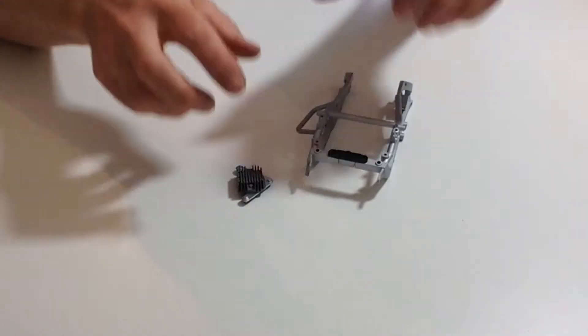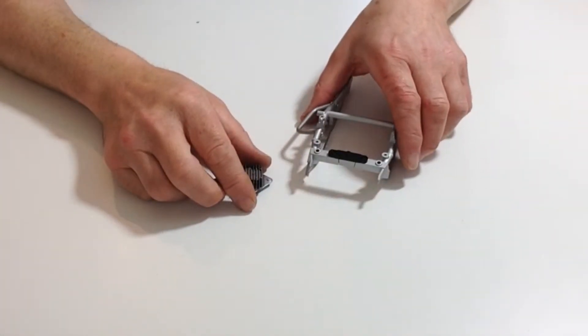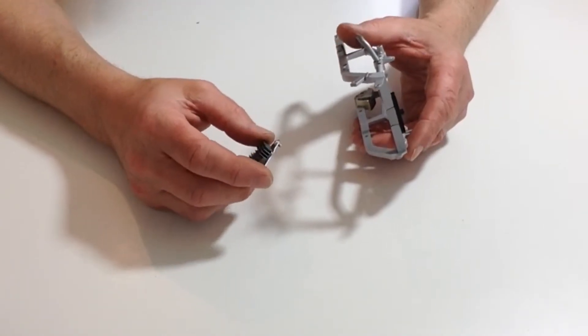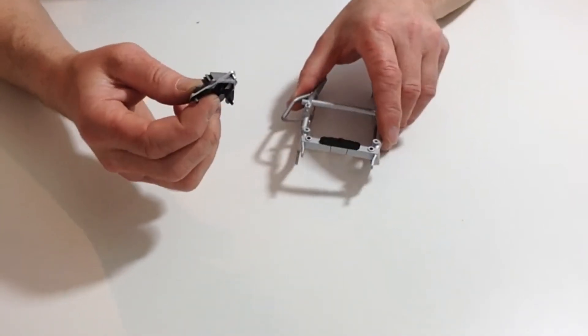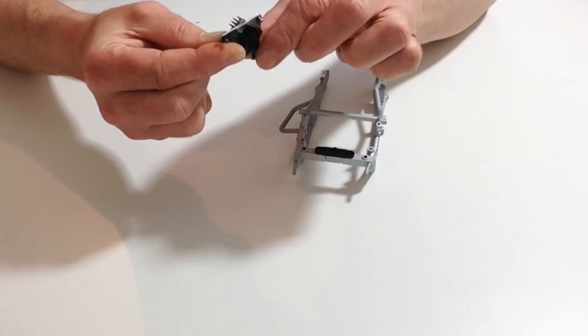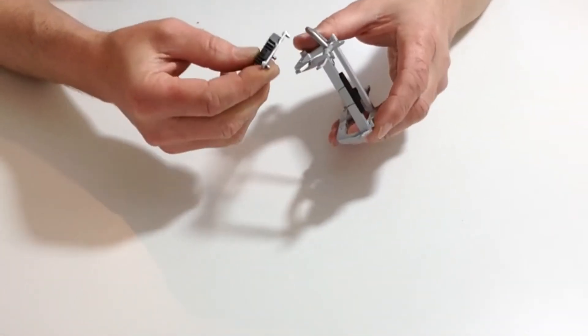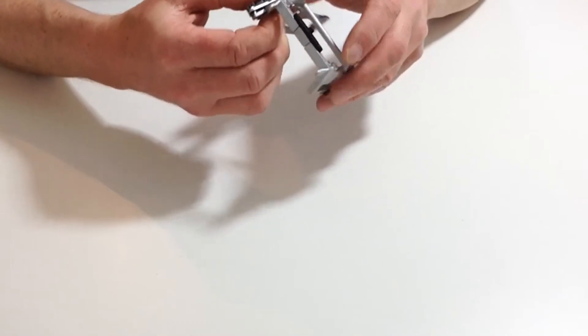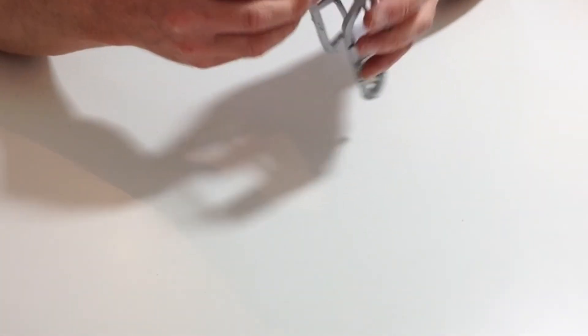Take the seat rail from stage 44 and also take the rectifier with the three protrusions in each corner and line them up as shown. Push those down into position.